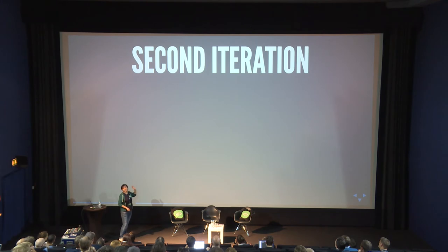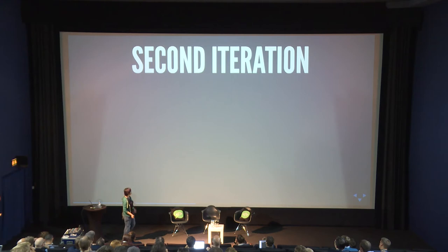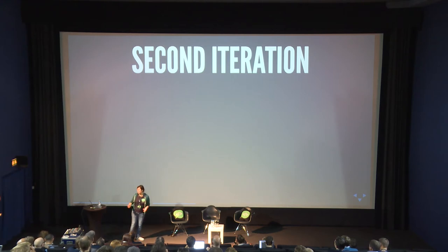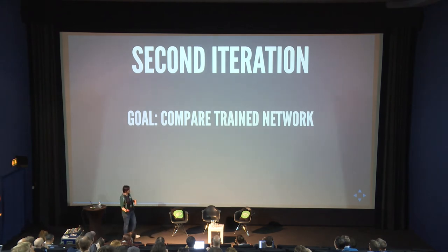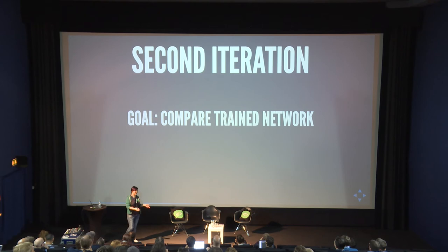I played about a million games and then I had the data. In the second iteration, my goal was to compare a trained network to an untrained network. In the untrained baseline I did random moves — I basically didn't check whether the move was good or not.